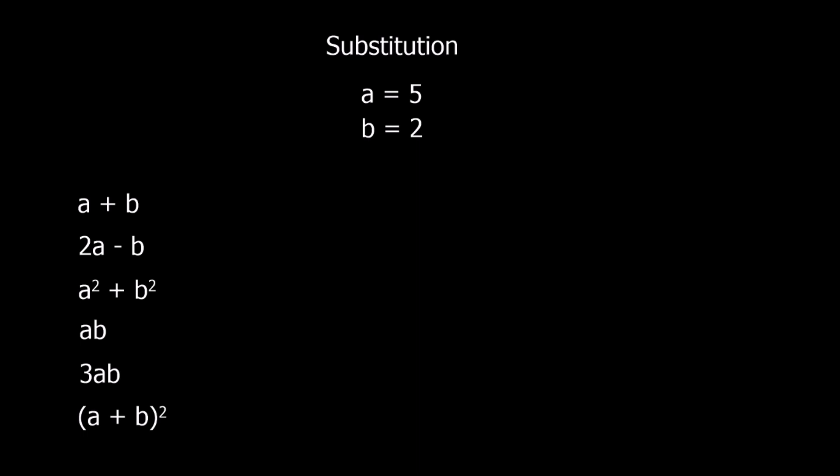In this video, we're going to do substitution. Now what that means is switching something for something else. So in this case, it's going to be switching our letters for numbers. In this example, A is 5 and B is 2. So wherever we see A, we're going to change it for 5, and wherever we see B, we're going to change it for 2.